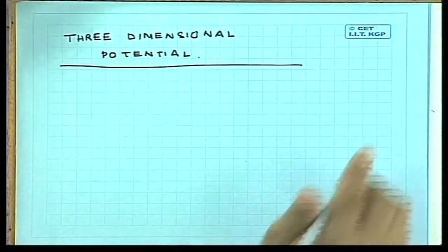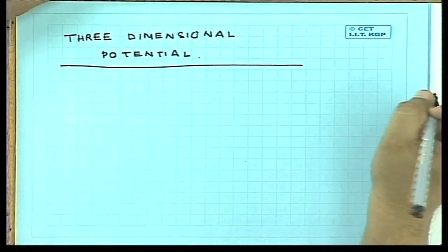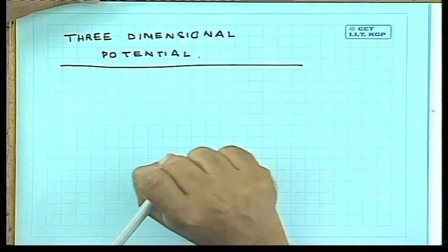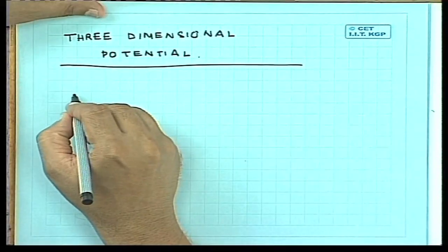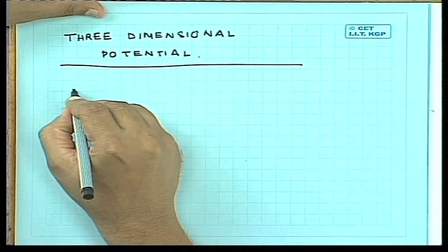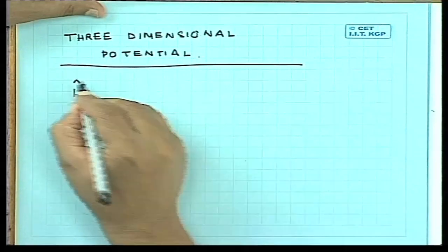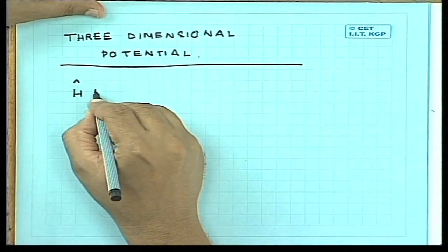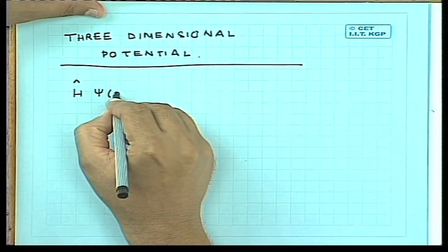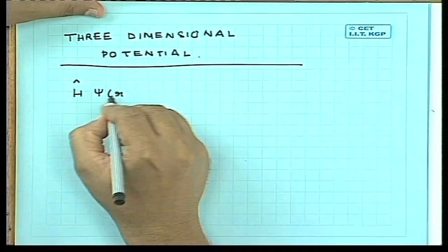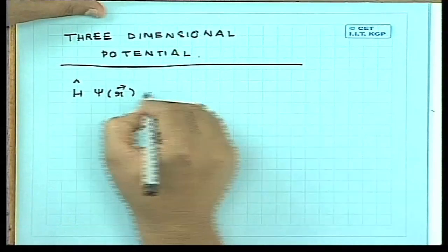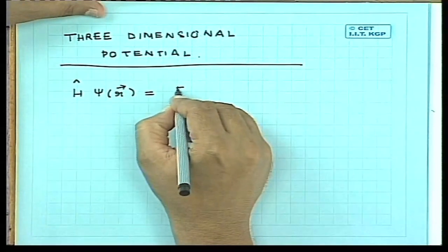Let us first write down the Schrödinger equation in this situation. The time-independent Schrödinger equation is, in this case, H psi, the same old equation. And now psi is a function of R, is equal to E psi.